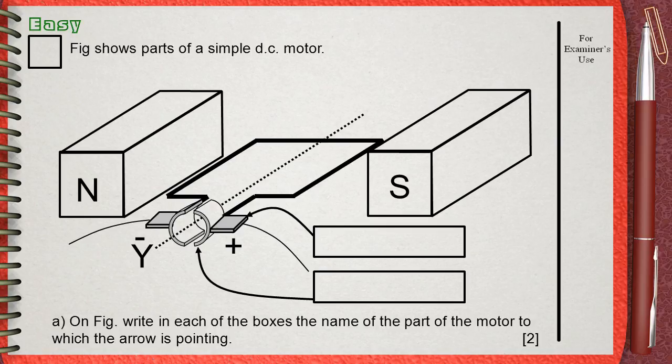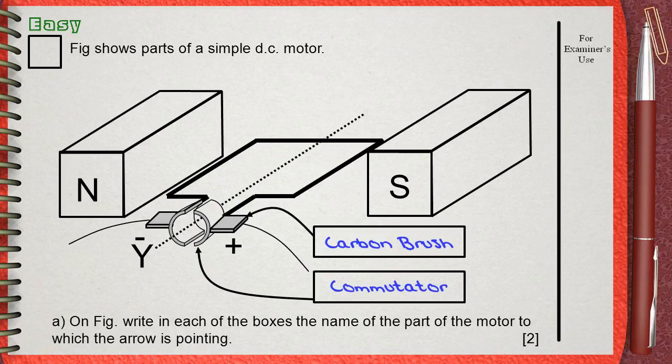The upper box points to what is named as carbon brushes and the lower box points to the commutators. This is a two mark question.